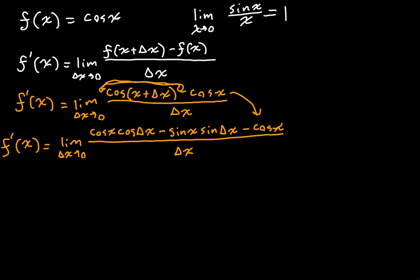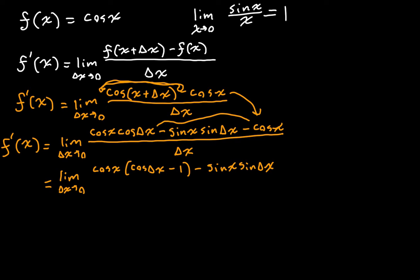So I'm going to start moving things around and manipulating our function here. I'm going to turn this into the limit as delta x goes to zero of cosine of x times the quantity cosine of delta x minus 1, minus sine x sine delta x. All I did was move that term over and factor cosine of x — if we distribute that out, we get all of our original terms. This is divided by delta x. At this point, I'm going to separate this out into two limits, which we can do by the limit rules.